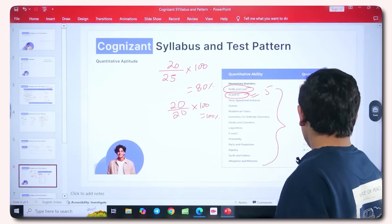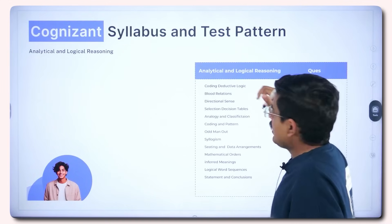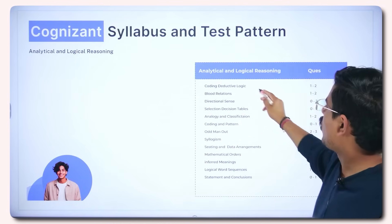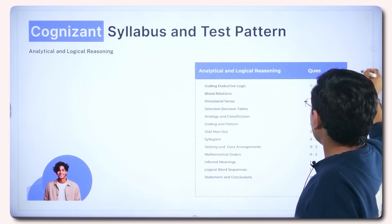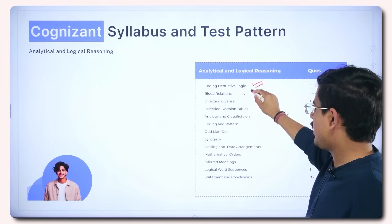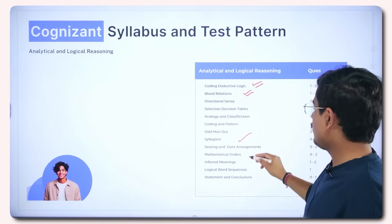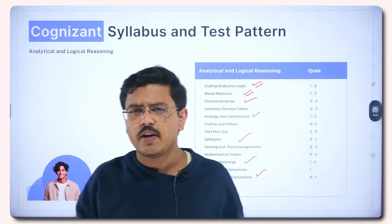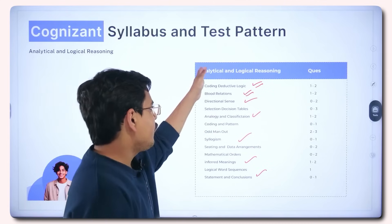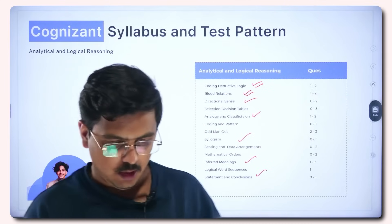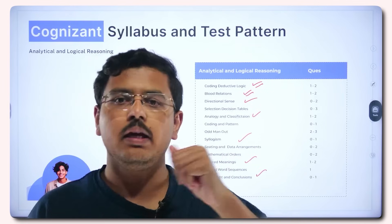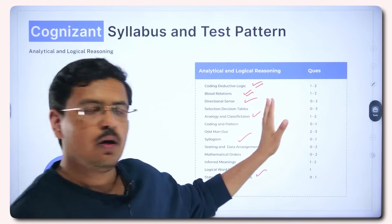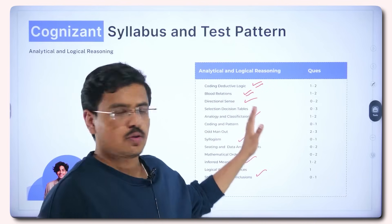Analytical and logical reasoning is also super important. Coding deductive logic is a very, very important portion — you must not miss it. Other key topics include blood relations, syllogism, inferred meanings, statements and conclusions, analogy classifications, and directional senses. If you want this PPT, comment that out and you will be sent a link to a community or group where you can find it — it will help you out with the syllabus.